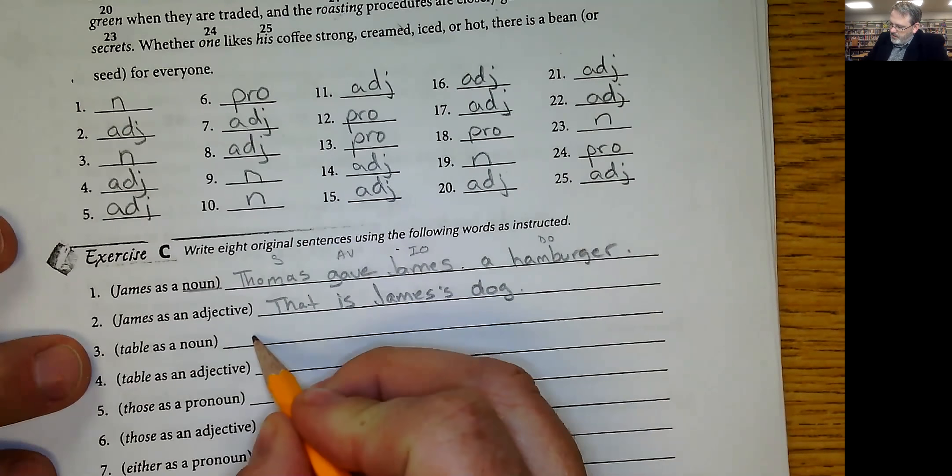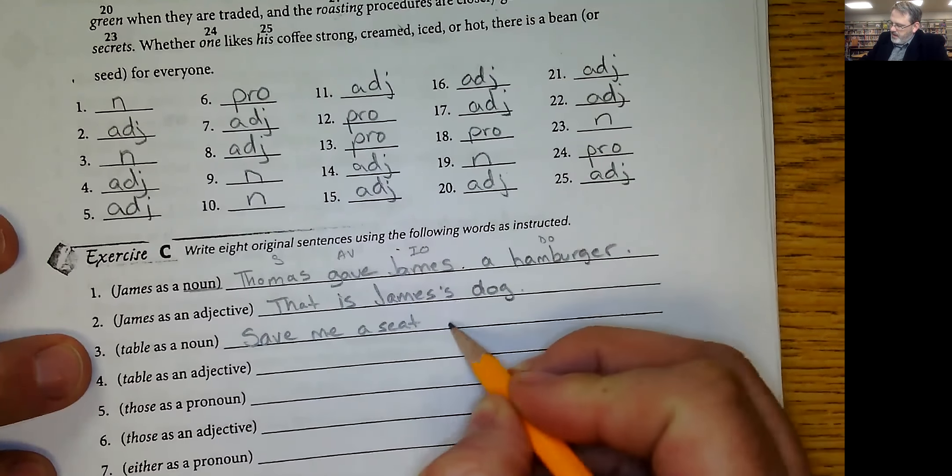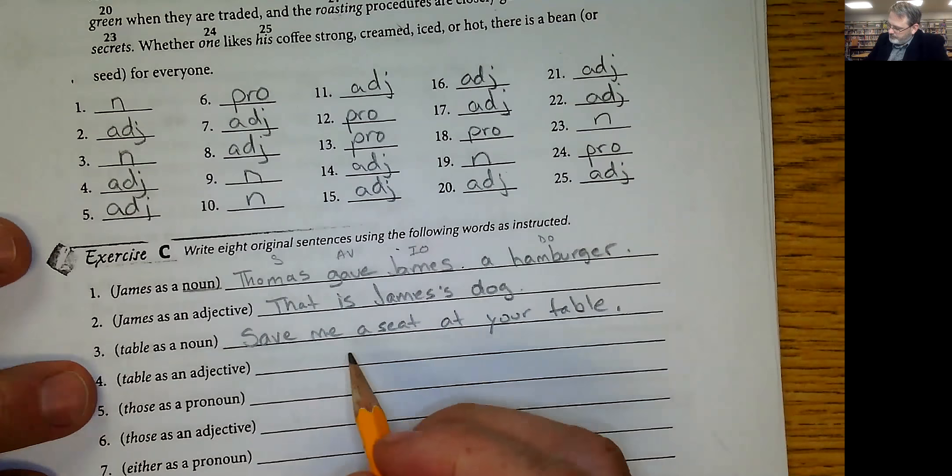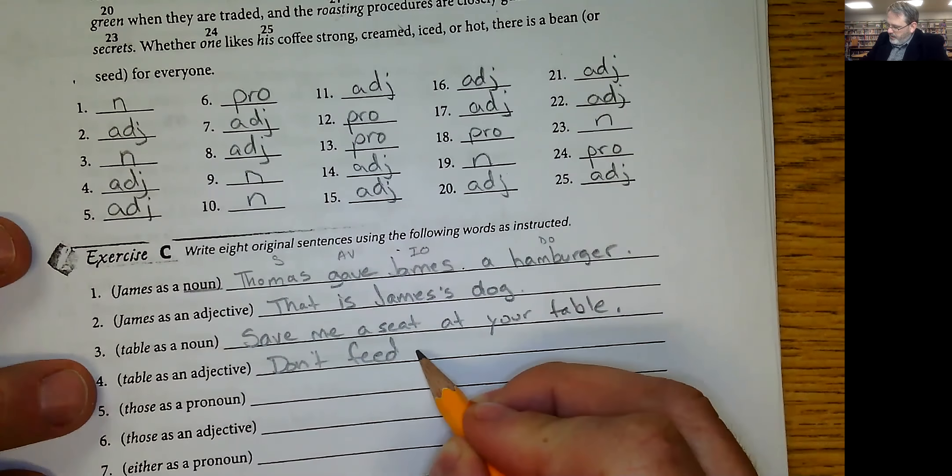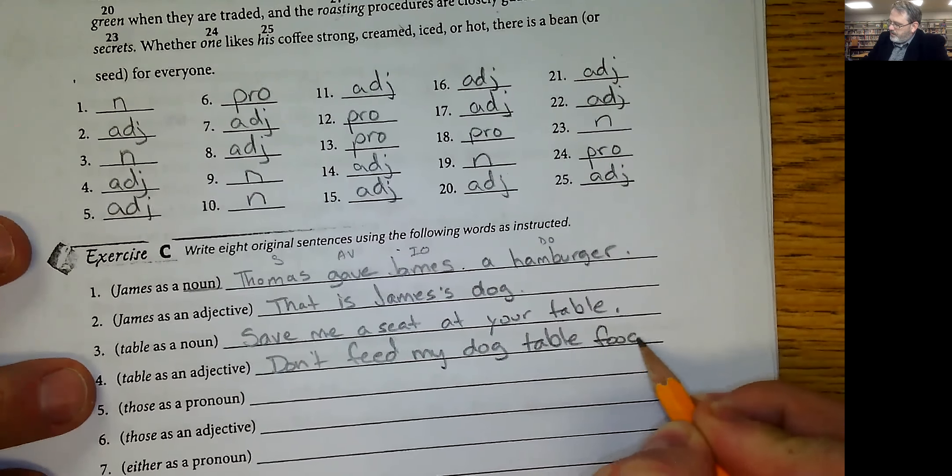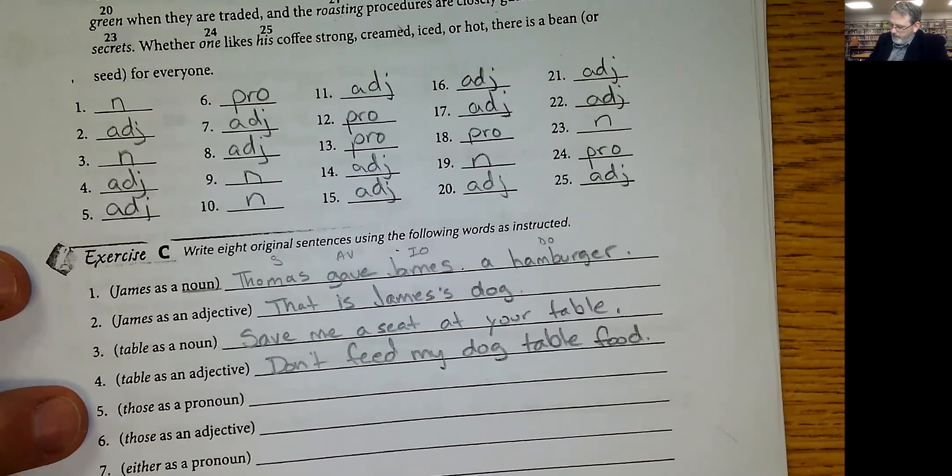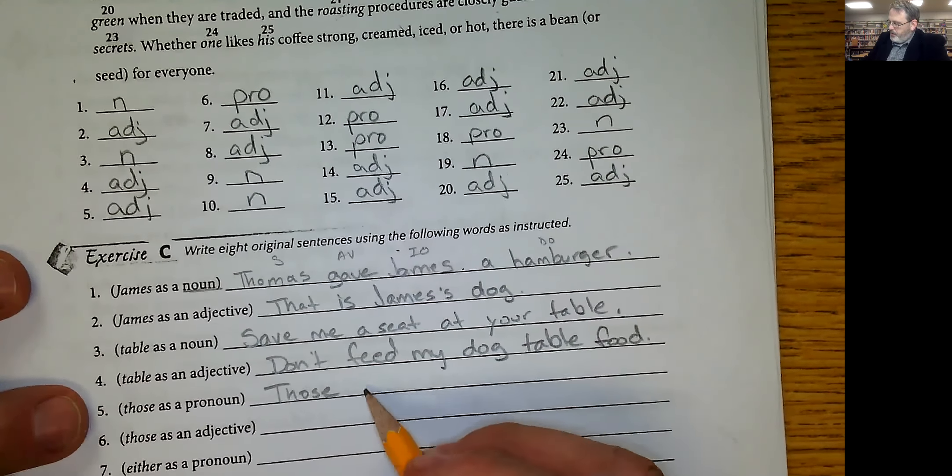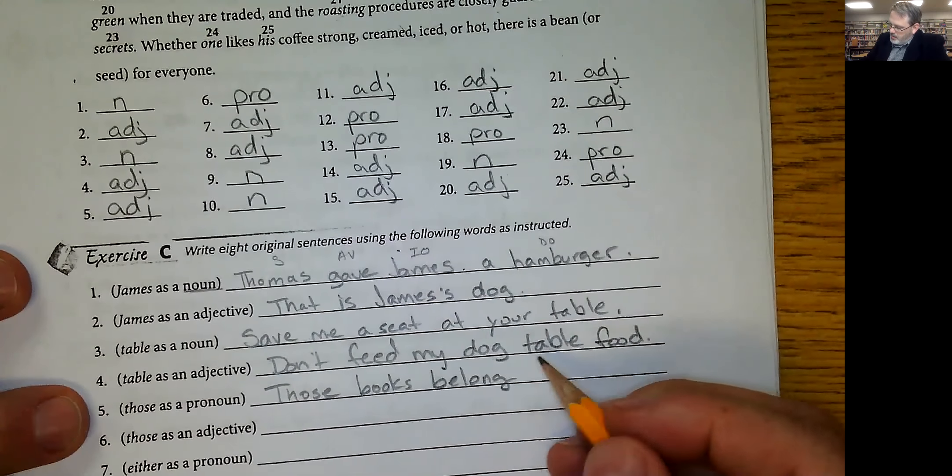Table as a noun. Save me a seat at your table. Table is an adjective. Don't feed my dog table food. What kind of food? Table food. Those as a pronoun. Those books.